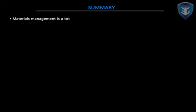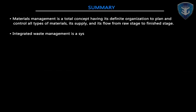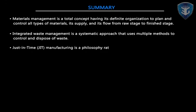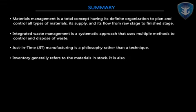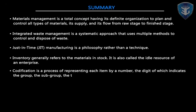In summary, what we have learned in this lecture: Materials management is a total concept having its definite organization to plan and control all types of materials, its supply and its flow from the raw stage to the finished stage. Integrated waste management is a systematic approach that uses multiple methods to control and dispose of waste. Just-in-Time (JIT) manufacturing is a philosophy rather than a technique. Inventory generally refers to the materials in stock — also called the idle resource of an enterprise. Codification is a process of representing each item by a number, the digits of which indicate the group, subgroup, type, and dimension of the item.